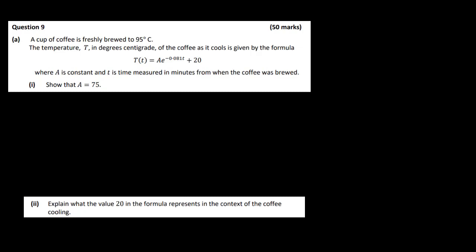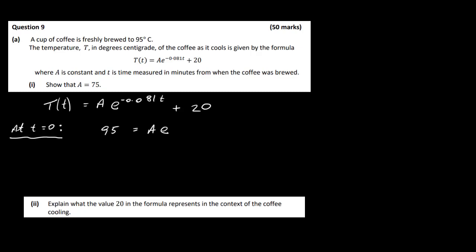We've got to show that A is equal to 75. Starting with our formula T(t) = A times e to the power of minus 0.081t plus 20. At t = 0, the temperature will be 95 degrees. So 95 = A times e to the power of minus 0.081 times 0, plus 20. Subtracting 20 gives 75 = A times e to the power of 0. Since e to the power of 0 is just 1, our constant A is equal to 75.